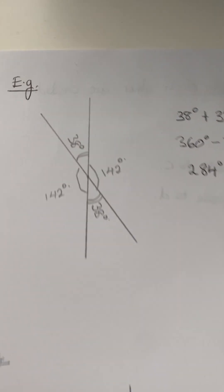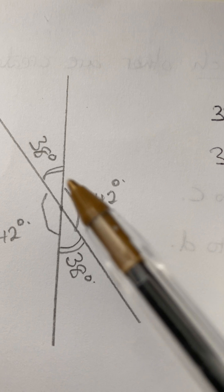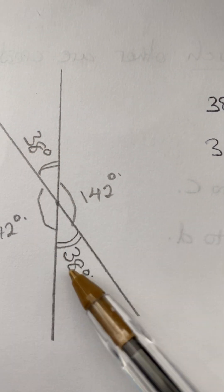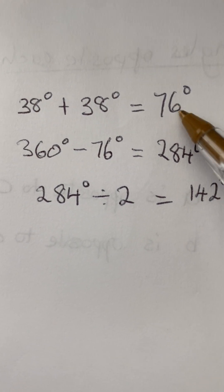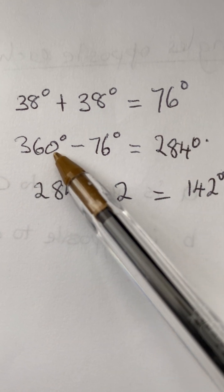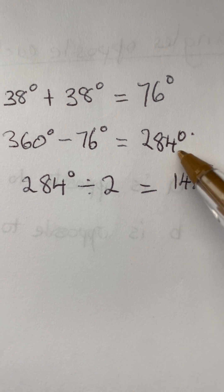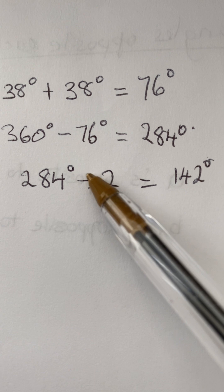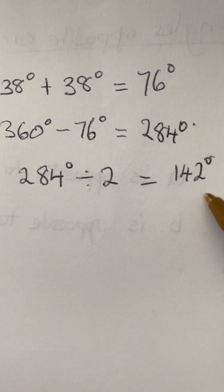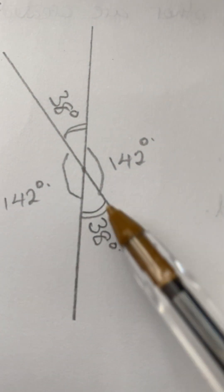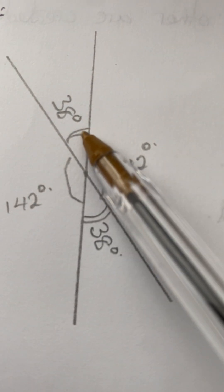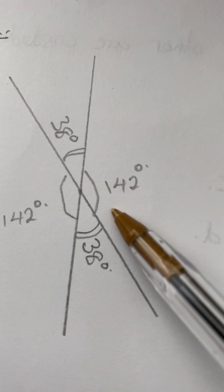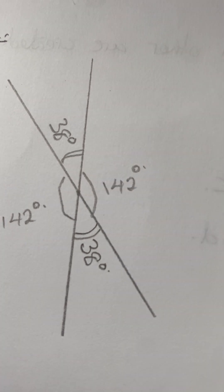Example four: the given angle is 38 degrees, so the opposite angle is also 38 degrees. Add both: 38 plus 38 equals 76. Subtract from 360: 360 minus 76 equals 284 degrees. Divide by two: 284 divided by 2 equals 142 degrees. So the four angles are 38°, 38°, 142°, and 142°. If you add all four angles they should add up to 360.